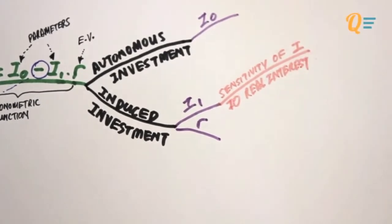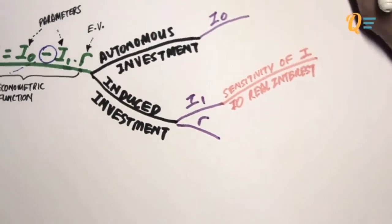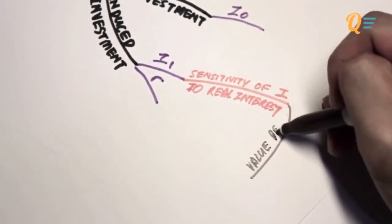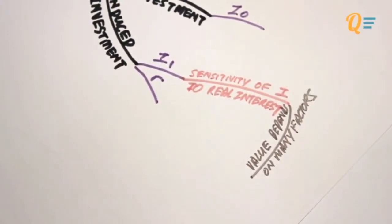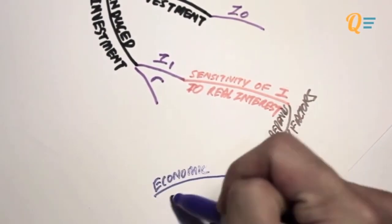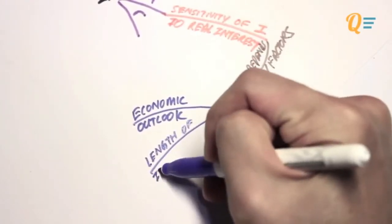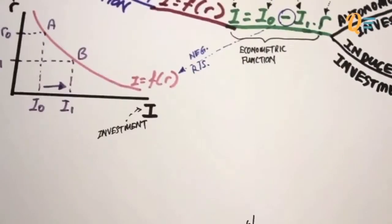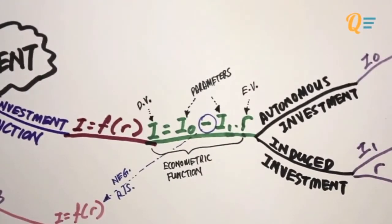The value of I1 depends on many factors. It doesn't lie between 0 and 1 — it can be any number. It depends on the economic outlook and the length of the investment maturity. This is not necessary to know for introductory economics, so don't worry — just take I1 as it is.